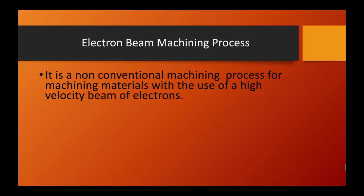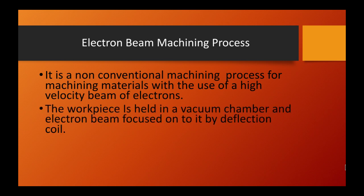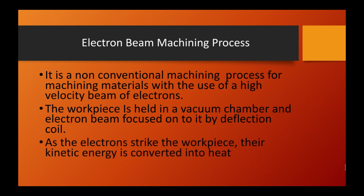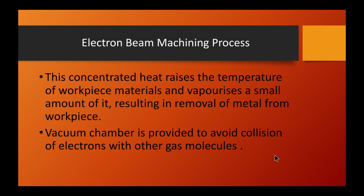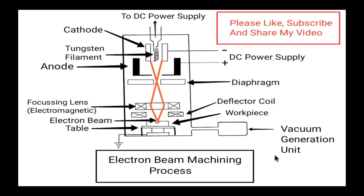The workpiece is held in a vacuum chamber and the electron beam is focused onto it by a deflection coil. As electrons strike the workpiece, their kinetic energy is converted into heat. This concentrated heat raises the temperature of the workpiece material and vaporizes a small amount of it, resulting in removal of metal. A vacuum chamber is provided to avoid collision of electrons with other gas molecules.